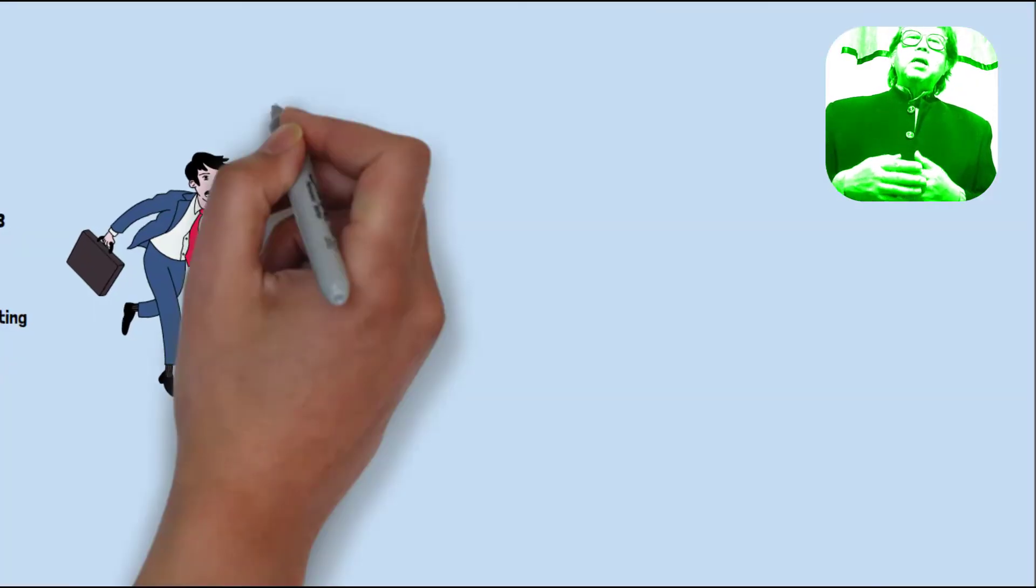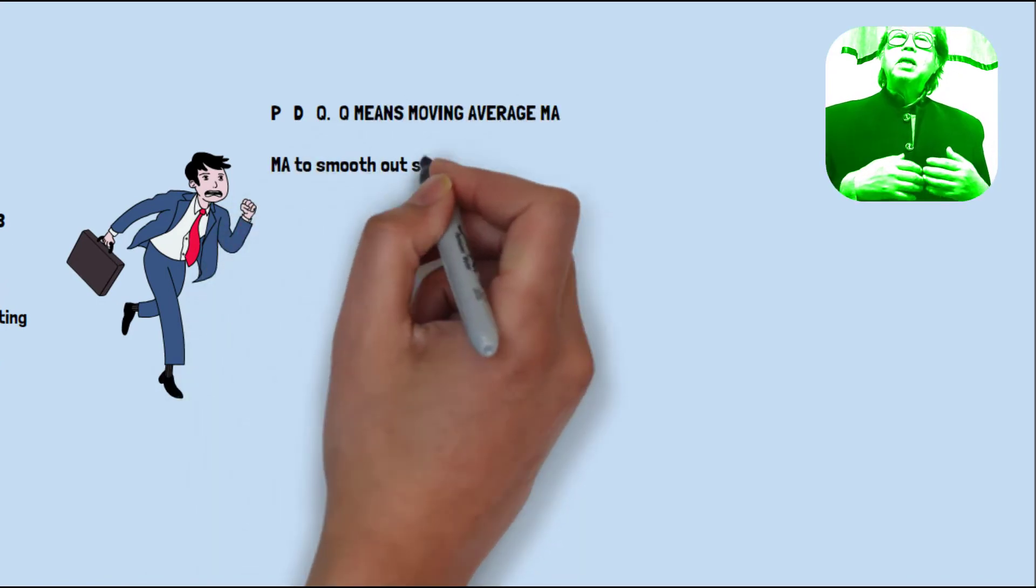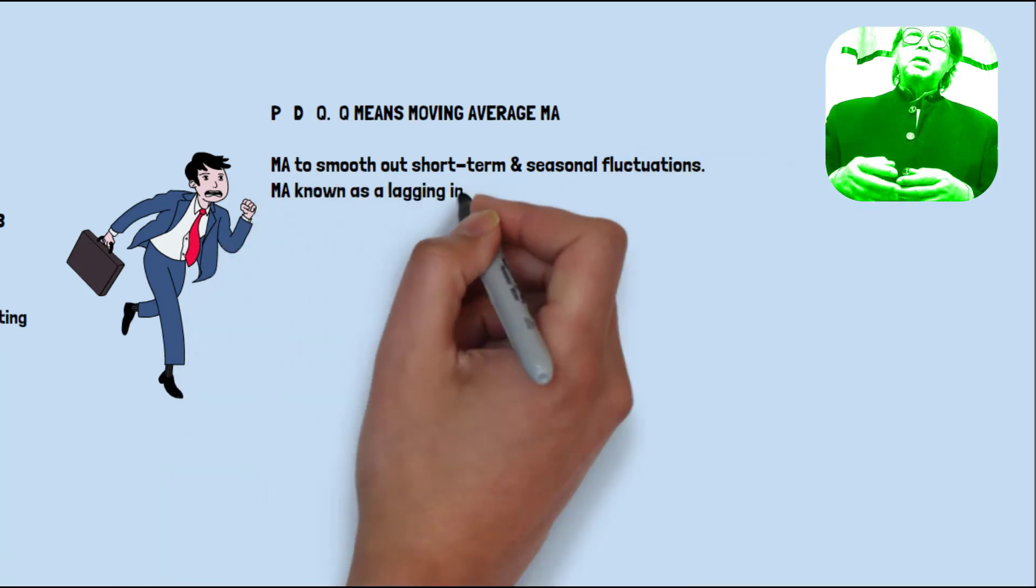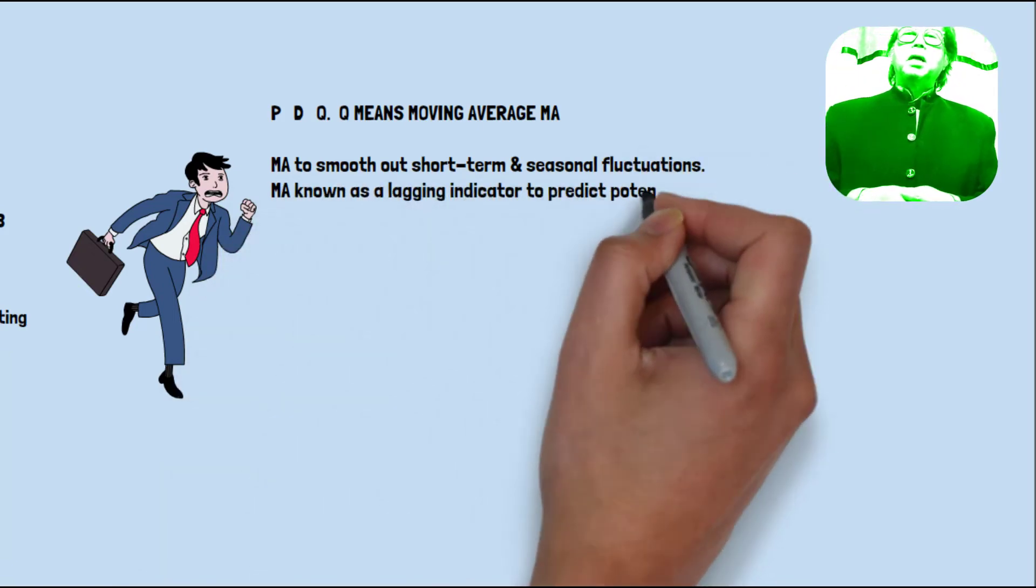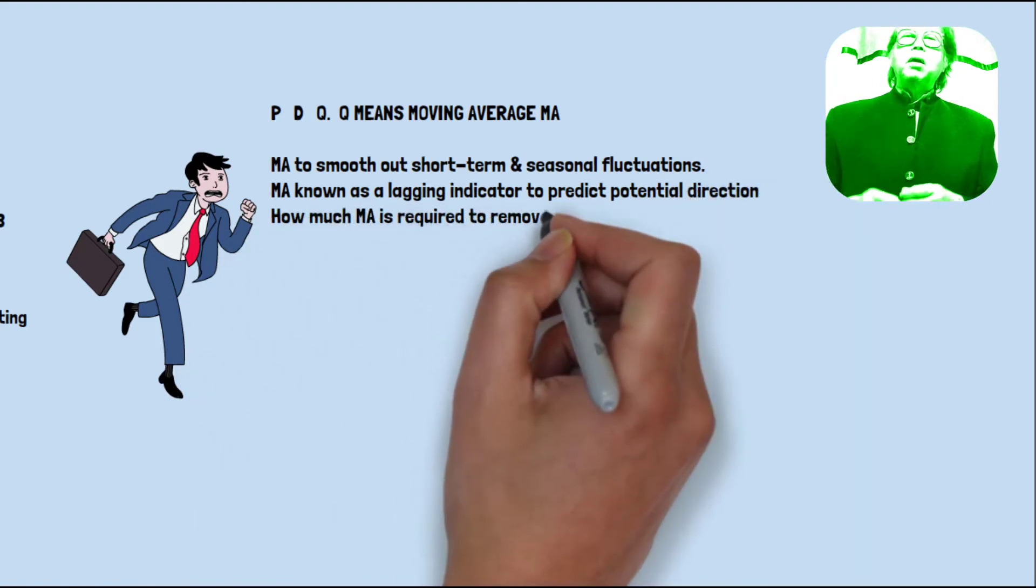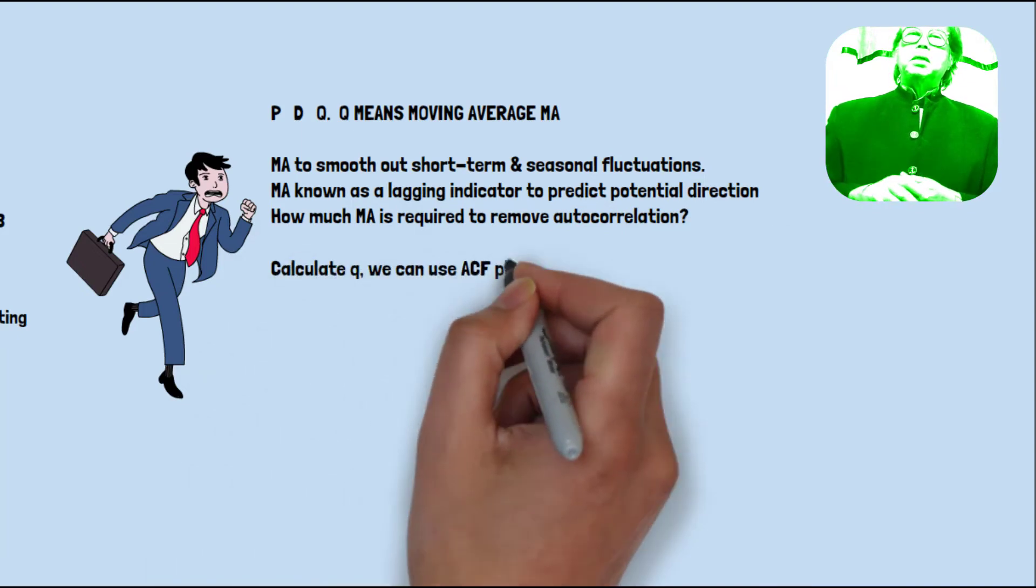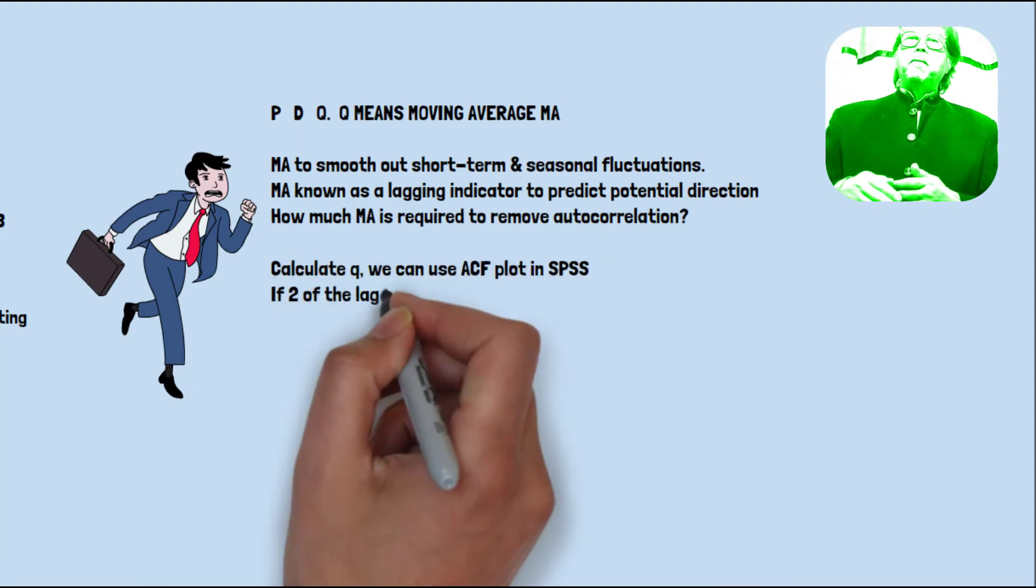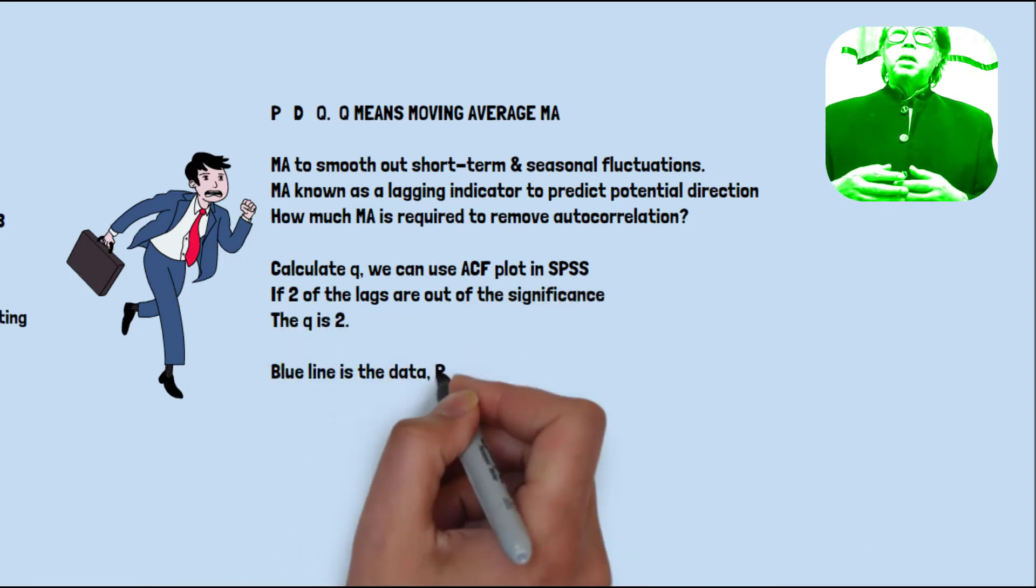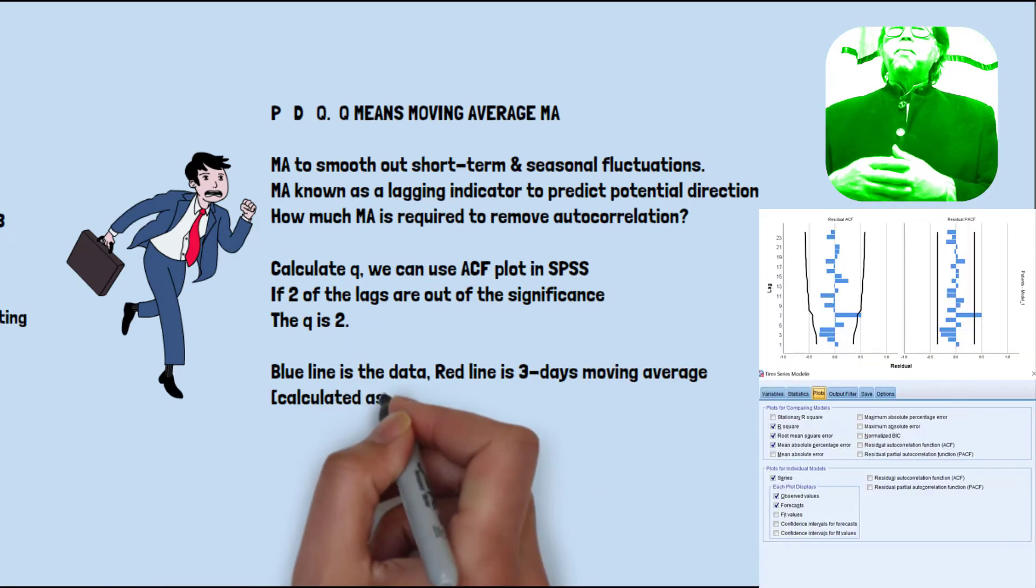So the last one, Q, means moving average. The moving average method is intended to smooth, to soften seasonal fluctuation. Moving average is also known as lagging indicator to predict the potential direction of time series, whether up and down. So moving average is required to remove the autocorrelation. To calculate Q, we can use the autocorrelation function plot.